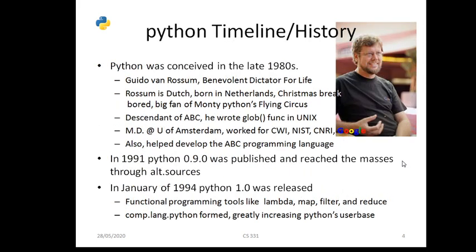Now let us see how Python was implemented. Python was implemented in the late nineteen-eighties. The creator — the Benevolent Dictator for Life — was born in the Netherlands. He was a big fan of Monty Python's Flying Circus.